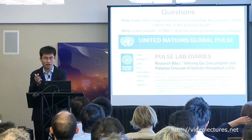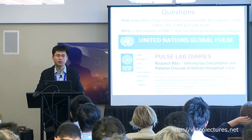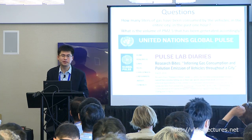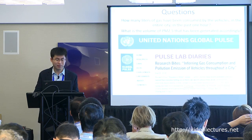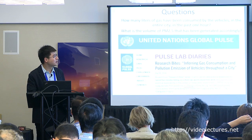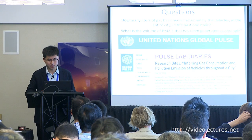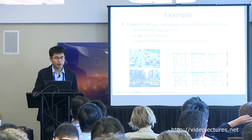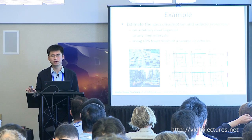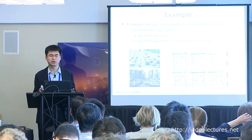But it is very important because it relates to environmental protection and energy consumption. A second question is: how many air pollution particulate matter with diameter smaller than 2.5 micrometers (PM2.5) have been emitted by these vehicles? We can infer travel speed, traffic volume, gas consumption, and pollution emission for every road segment throughout the entire city, based on GPS trajectories from a sample of vehicles.